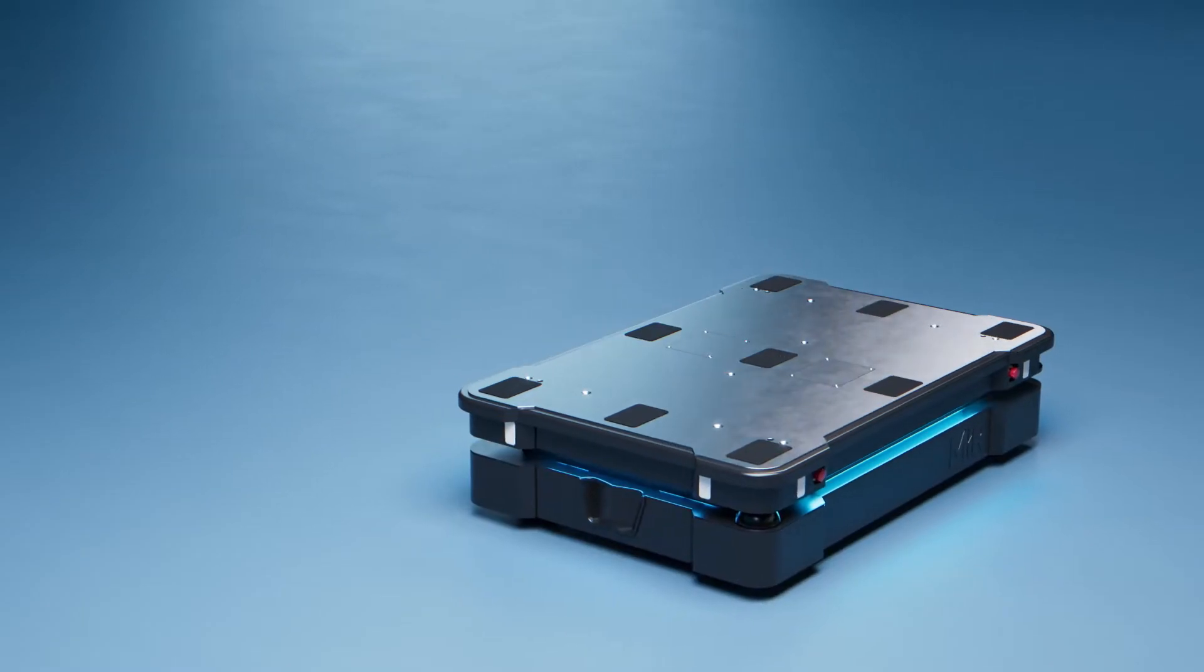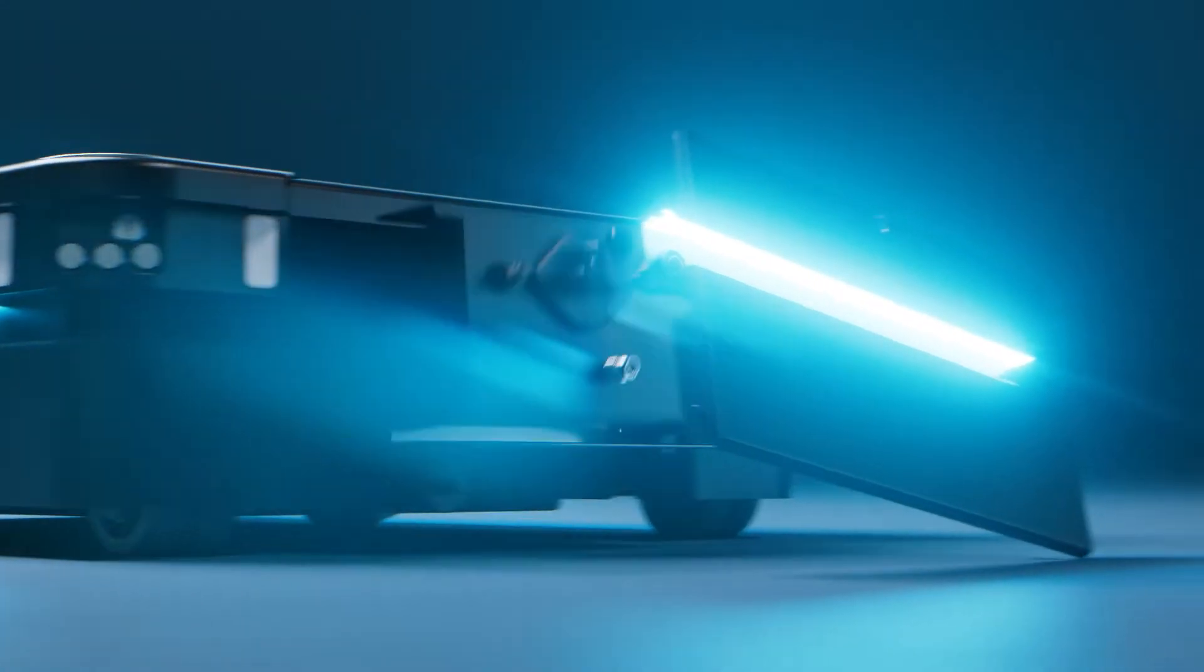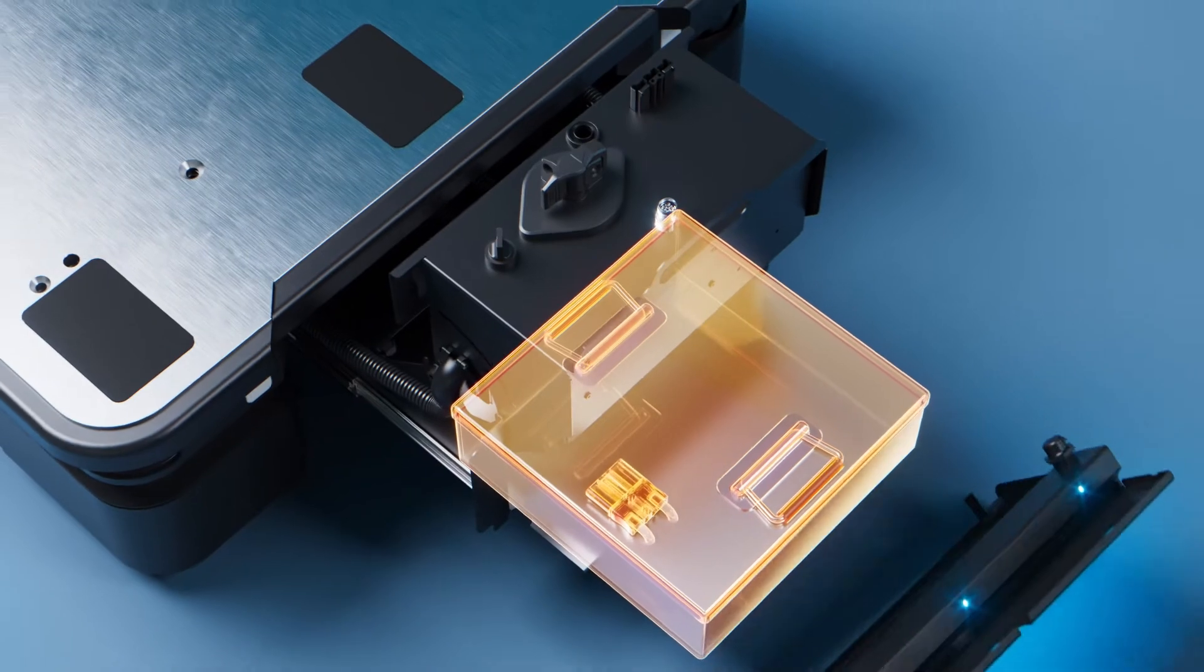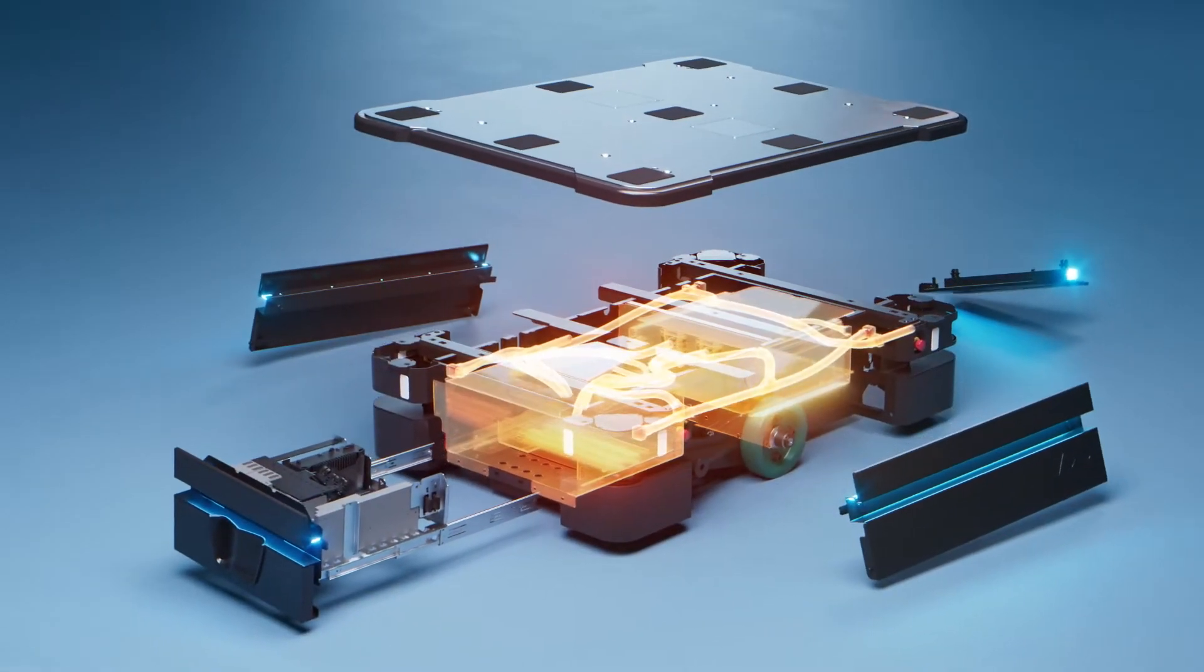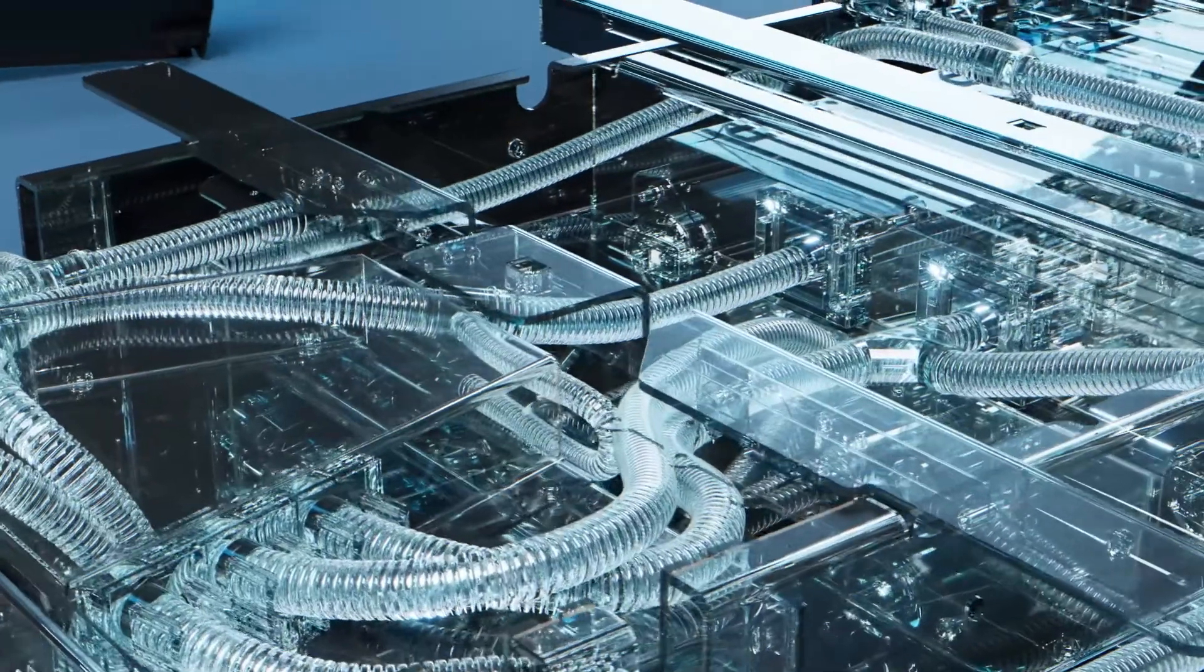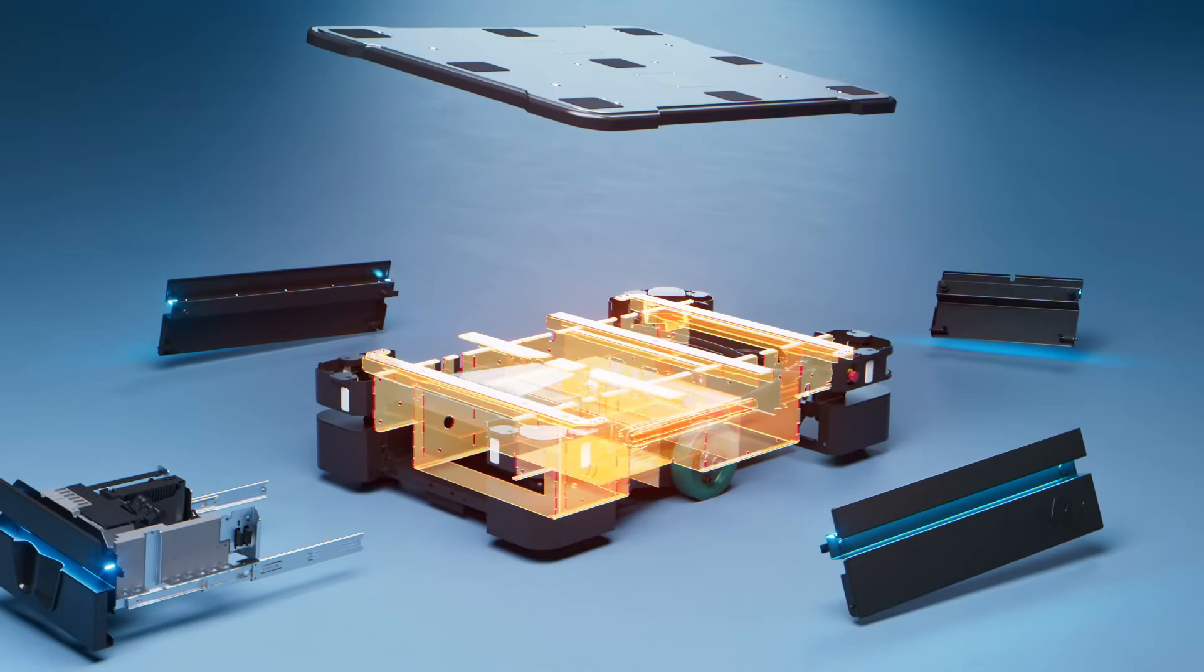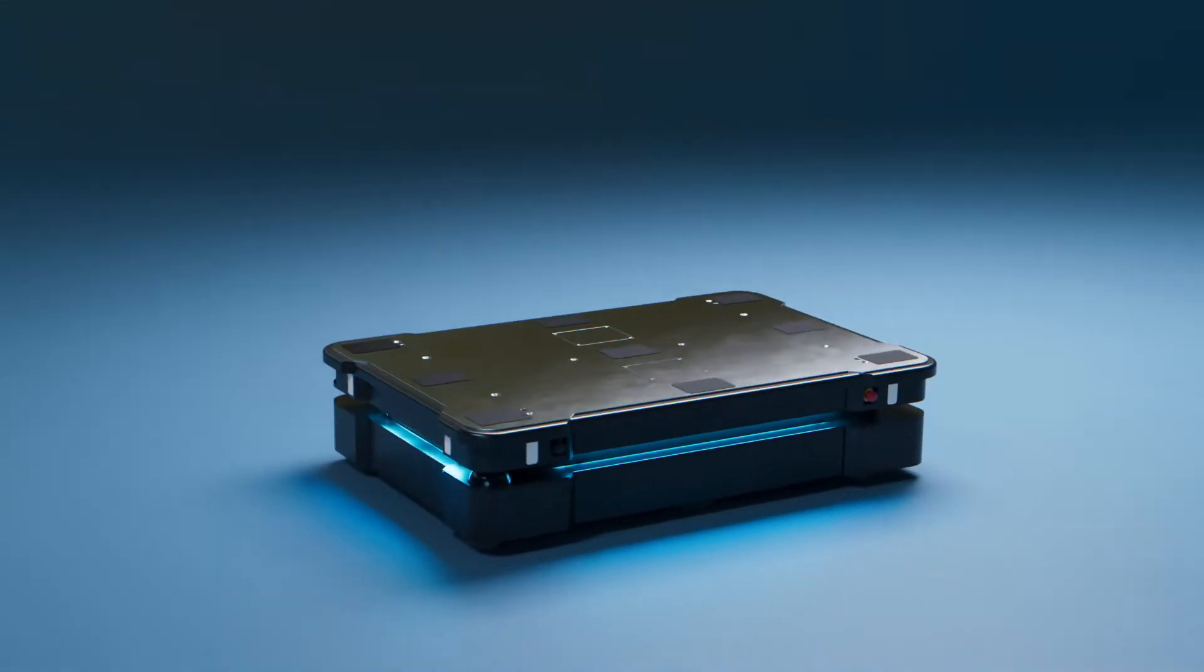The MiR 600 and MiR 1350 ensure minimal downtime with easy access for service. The robots are the first IP52-rated AMRs protecting against dust and water drops. With enhanced and protected components and a sturdy and robust chassis, the MiR 600 and MiR 1350 offer a long lifetime with heavy-duty lifting.